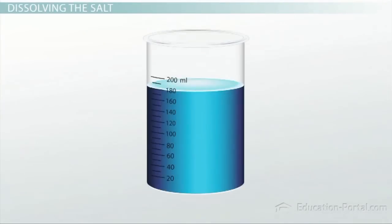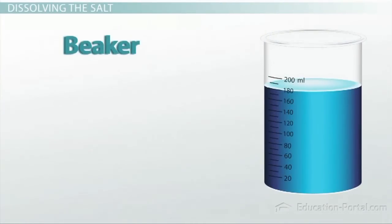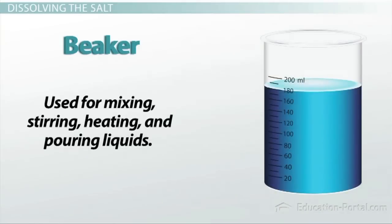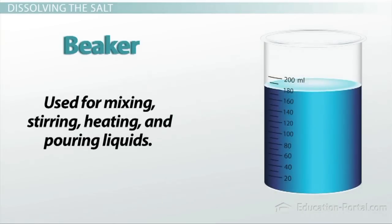Next, we will put our salt into a beaker, add some water, and stir to dissolve the salt to form a solution. Beakers also come in many shapes and sizes, and they usually have volume markings on them. You should never use them to make a precise measurement, though. The volume markings should only be used as approximations. Beakers are used for mixing, stirring, heating, and pouring liquids.